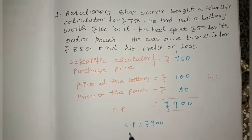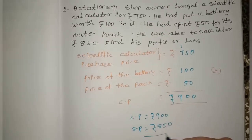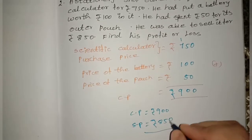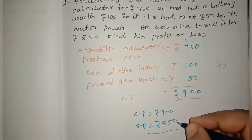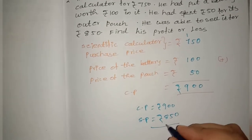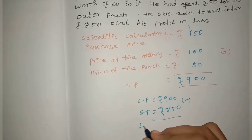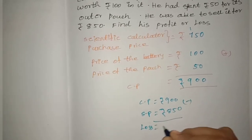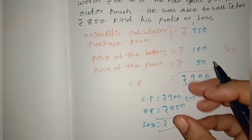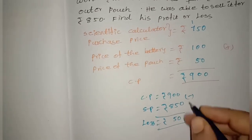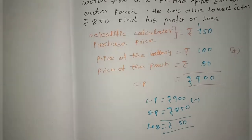The selling price is 850 rupees and the cost price is 900 rupees. Comparing: the selling price is less than the cost price, so there is a loss.